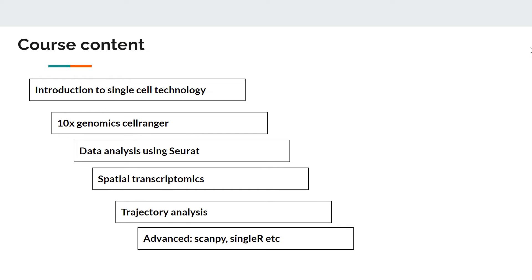These are the topics I have thought to include: we'll have a session on single cell technology itself, then we will talk about CellRanger, which is the tool developed by 10x Genomics — a single cell technology company — and the tool used to convert FASTQ data to count data. We will be looking into that.